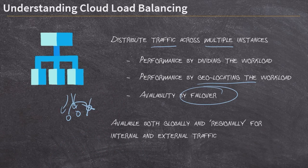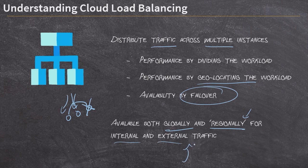Google's load balancer is available both globally and regionally. Globally, users in different parts of the world can be distributed to data centers that are physically close to them. Regionally — and regions are a Google concept describing their data centers in different parts of the world — you can load balance traffic within just those regions. Load balancing is also available for both internal and external traffic. External traffic comes from the public internet, while internal traffic stays inside Google's cloud, such as between front-end and back-end services running on Compute Engine, App Engine, or Kubernetes Engine.